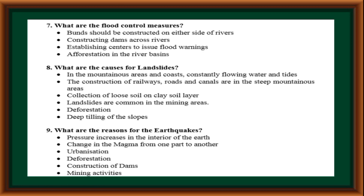What are the flood control measures? Embankments should be constructed on either side of the rivers. Constructing dams across rivers, establishing centers to issue flood warnings, and reforestation in the river basins.